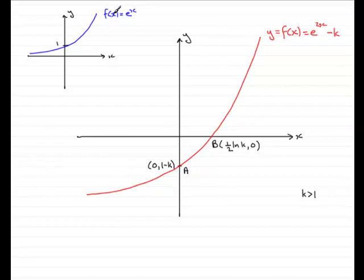Now, if we were to replace that x with the 2x, we would generate the graph of f of 2x. And in this case, it would be e to the 2x. And f of 2x would always take any graph of f of x and stretch it by a scale factor of a half parallel to the x axis.